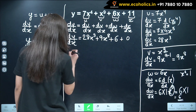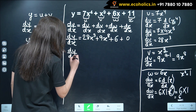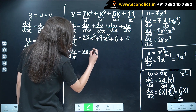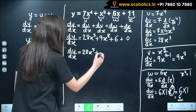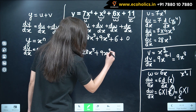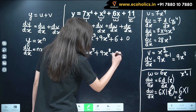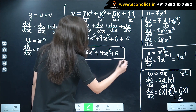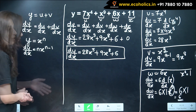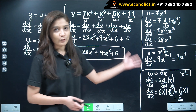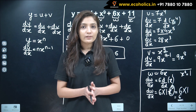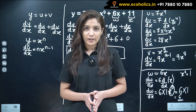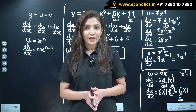So dy by dx is equal to 28x raised to 3 plus 9x raised to 8 plus 6. We have seen how simply we can solve these examples. That's it for this video. In our subsequent videos, we will be seeing other rules of differentiation as well. Do like and subscribe to our channel. Thank you.